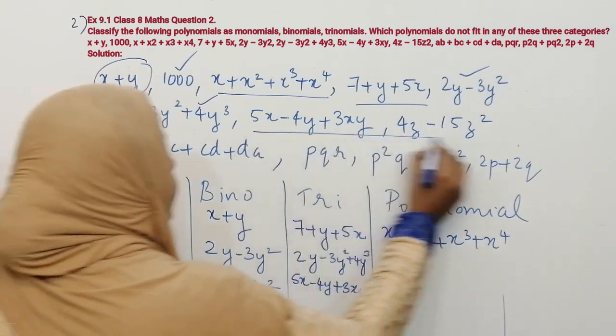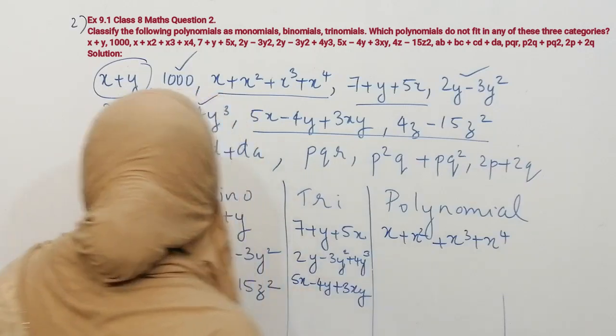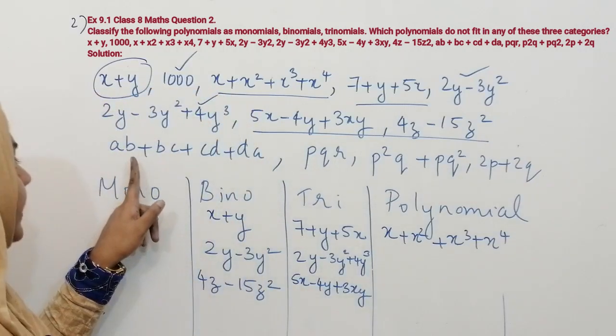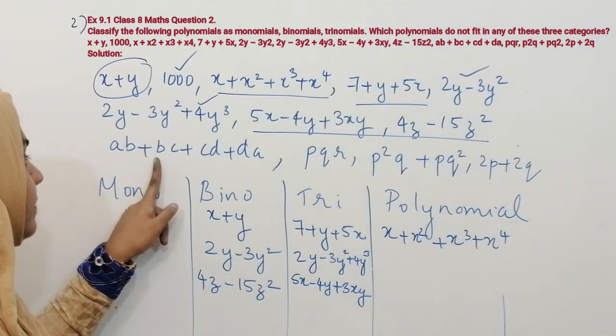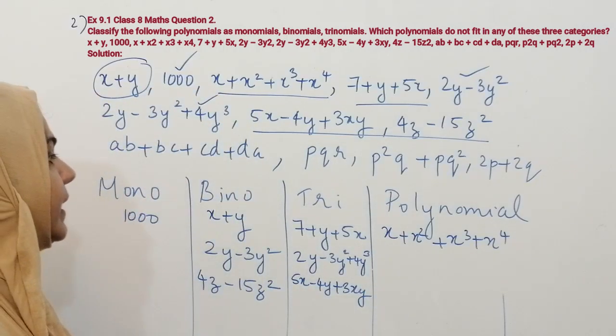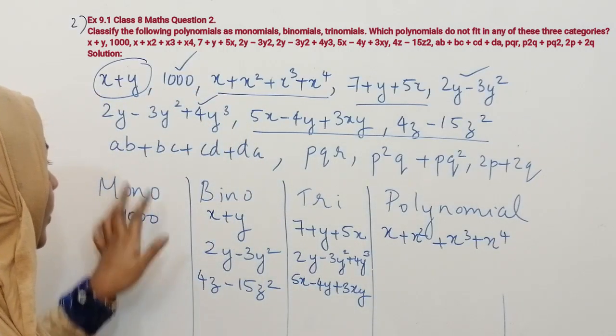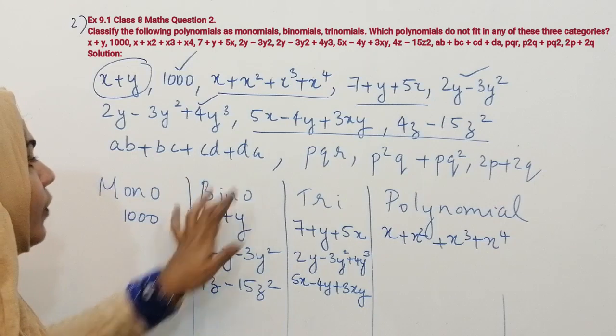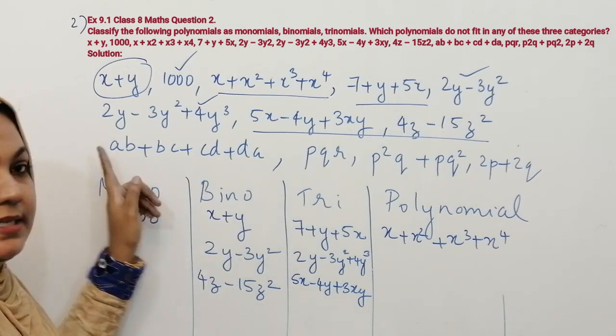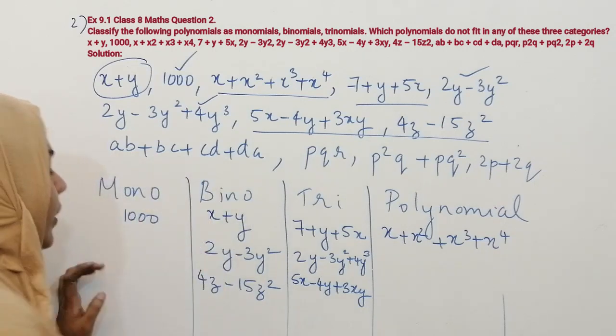The next one is ab plus bc plus cd plus da. You know that it has four terms, so it is a polynomial.